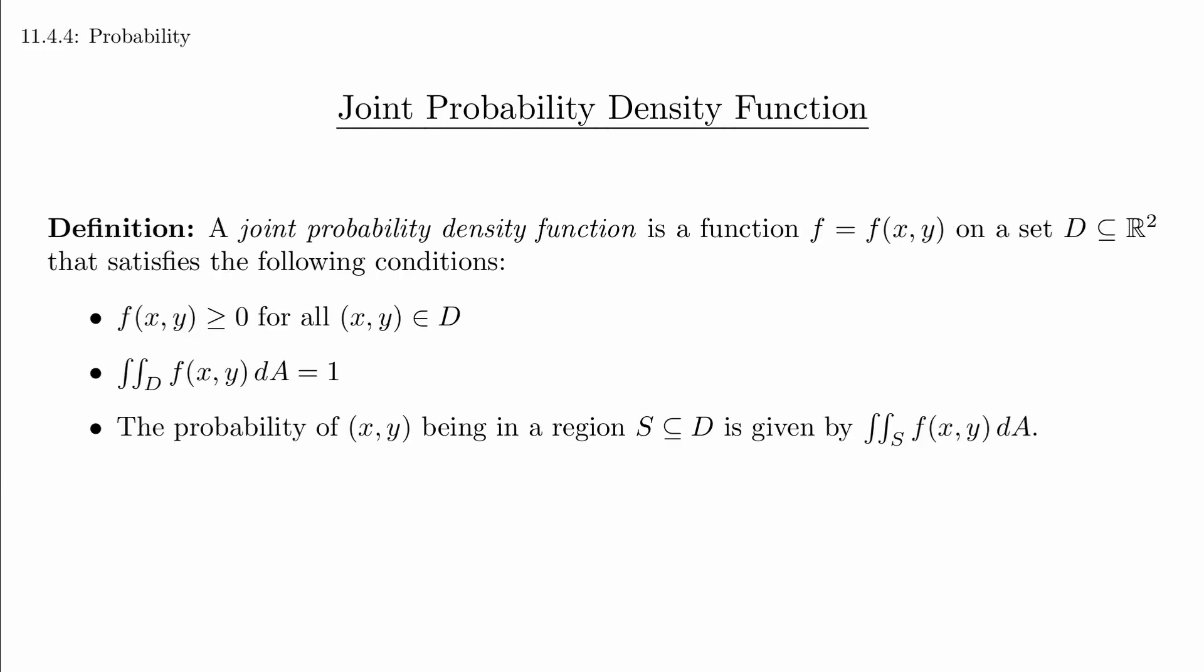Here's the definition for a joint probability distribution function. f(x,y) is greater than or equal to 0 for all (x,y) in D. The double integral of f(x,y) over D is 1. The probability of a point (x,y) being chosen so that the point is in the region S is given by the double integral of f over S. You might notice that the language used here is slightly different from the language of the book.